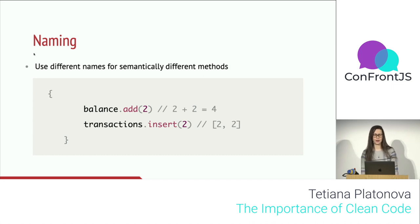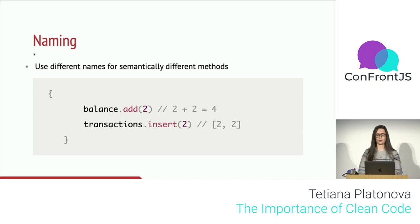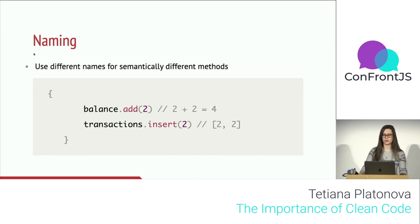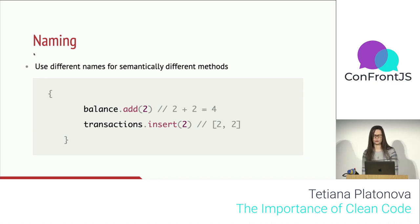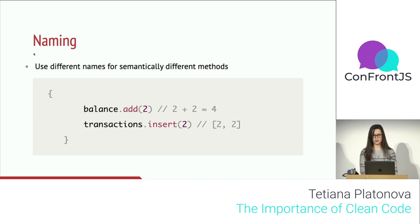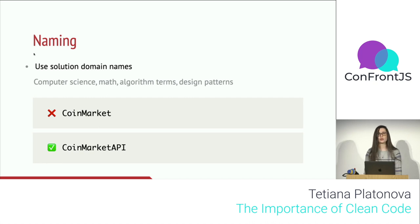Use different names for semantically different methods. In this example, the first method adds two variables together, and the second adds a value into an array. In natural language both sound like 'add,' so it feels like we should use 'add' for consistency. But under the hood they do semantically different things: the first creates a new value from two parameters, while the second mutates an existing value by extending an array. So we should use different names for such methods.